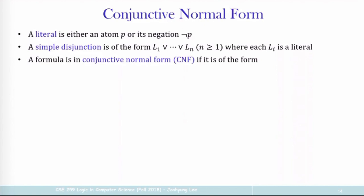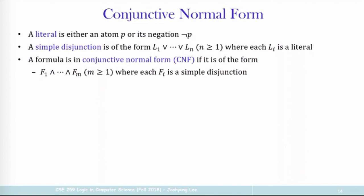First we know what an atom is — P, Q, R. A literal is either an atom or its negation. Then we talk about simple disjunction, which is just disjunction over these literals. Conjunctive normal form is this form: it is a conjunction of many formulas F1 through Fm, where each of these formulas Fi is a simple disjunction. So it's basically a conjunction over disjunctions of literals — that's what conjunctive normal form is about.